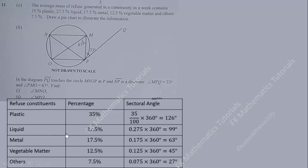We repeat the same process for all constituents. For liquid, 27.5% of 360 degrees gives 99 degrees. For metal, 0.175 times 360 gives 63 degrees. For vegetable matter, 0.125 times 360 gives 45 degrees. Finally, for others at 7.5%, 0.075 times 360 gives 27 degrees.